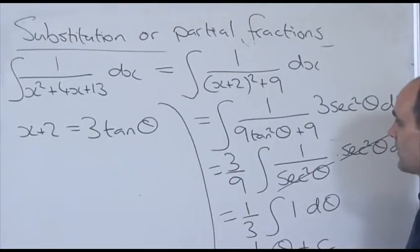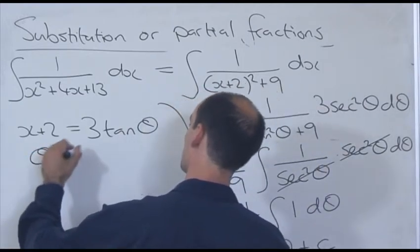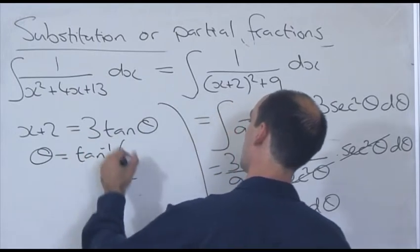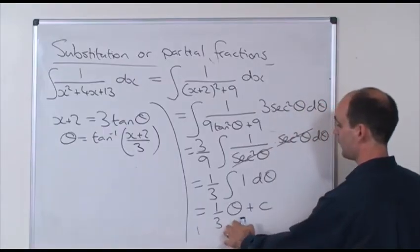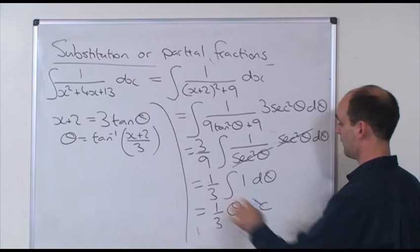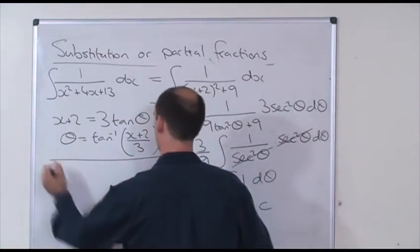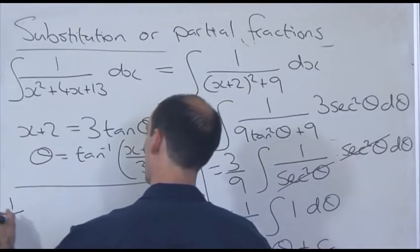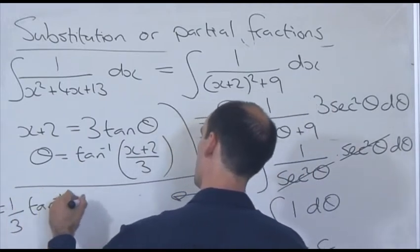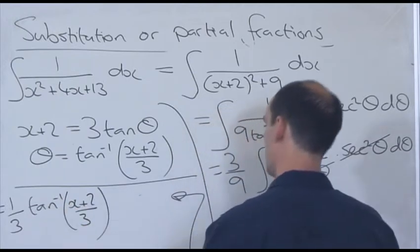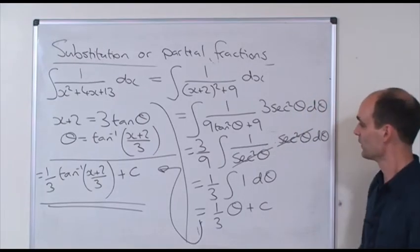Now I need to substitute back. If x plus 2 equals 3 tan(theta), then theta equals the inverse tangent of (x plus 2) over 3. So the final answer to the integral is (1/3) arctan((x plus 2)/3) plus the integration constant.